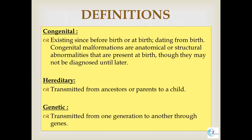The second term is hereditary. Hereditary refers to when a disease is transmitted from ancestors or parents to the child — that condition is a hereditary condition. The other term is genetic, in which the transmission of the disease is from one generation to another, that is from parent to offspring directly through the genes.